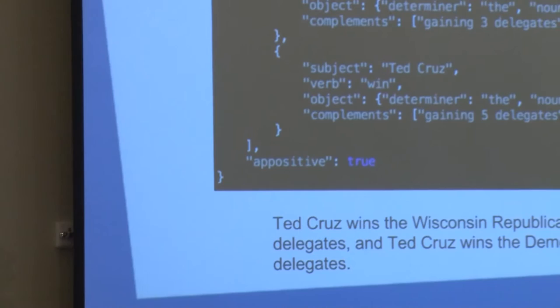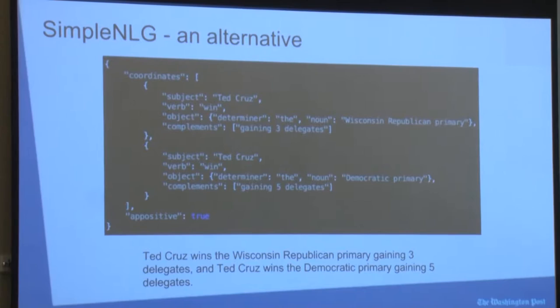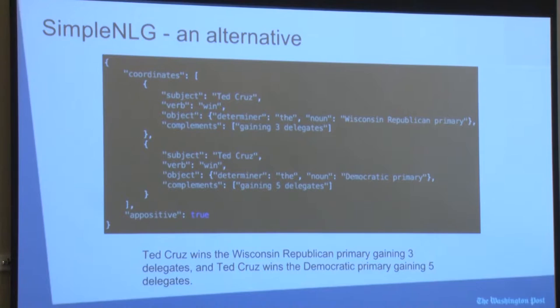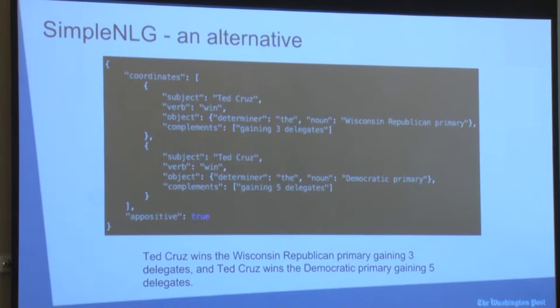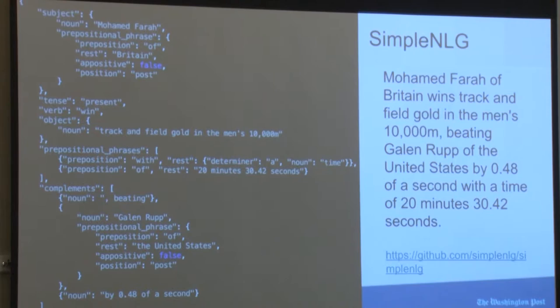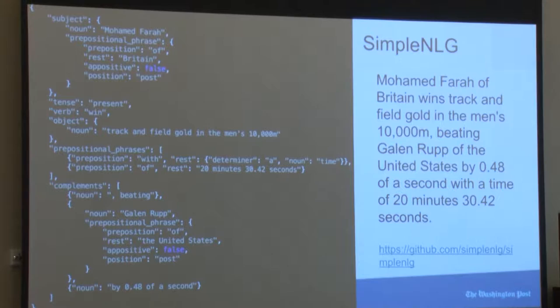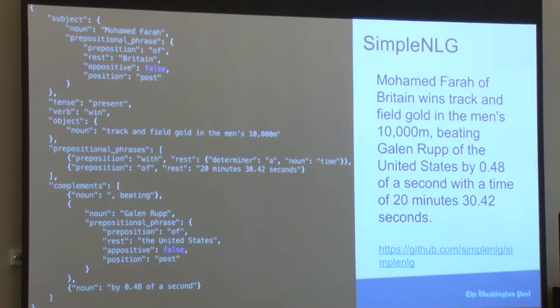An alternative to templates is using a library named SimpleNLG, which allows one to define a sentence using its syntactic structure. These small components can be easily changed, added, or removed. SimpleNLG serves as a surface realization engine that uses the rules of English grammar to convert a sentence's syntactic structure into a full-blown sentence, complete with capitalization, punctuation, and subject-verb agreement. Another benefit is the ability to define a single general syntactic structure for a sentence and modify it slightly depending on context — for example, changing 'with a time of' to 'with a jump of' depending on the Olympic event.